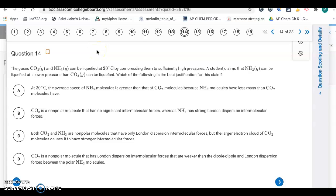All right, so here's part two, the unit two progress check. We have the gases CO2 and NH3 that can be liquefied at 20 degrees Celsius by compressing them. A student claims that NH3 gas can be liquefied at a lower pressure than CO2 can be liquefied.